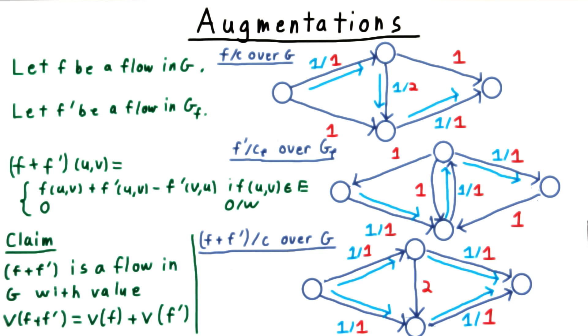It fits within the capacity constraints, essentially by construction of the residual capacities, and it conserves flow because both F and F prime do. So, yes.